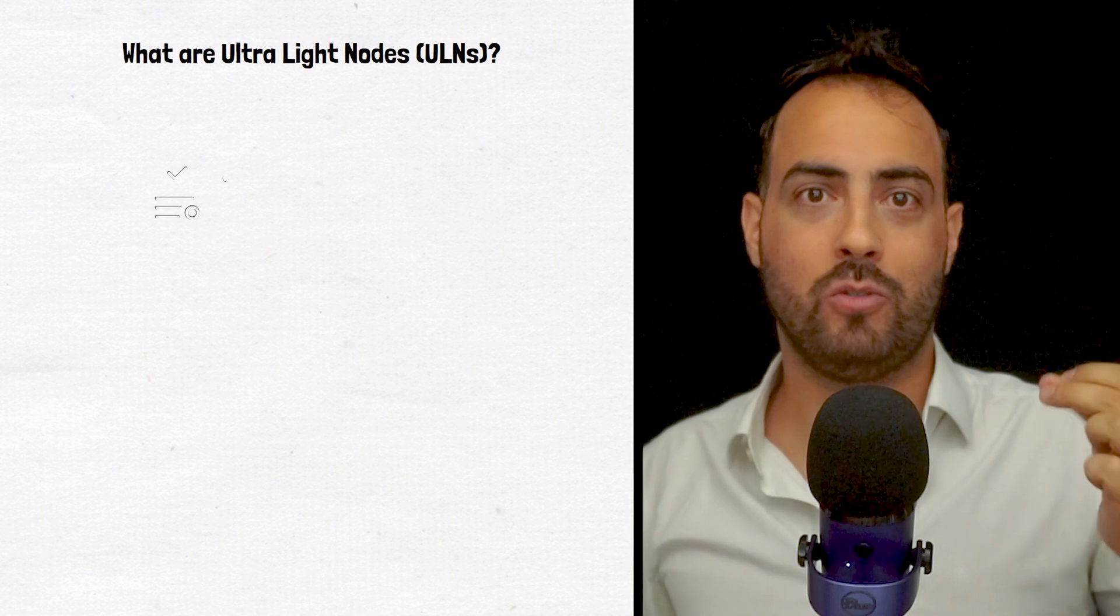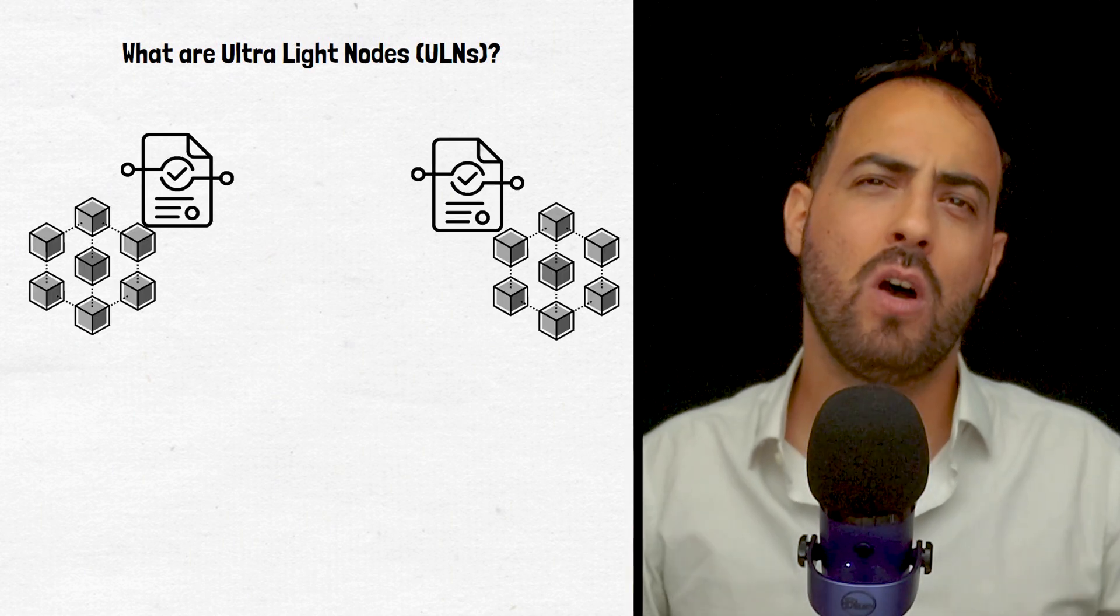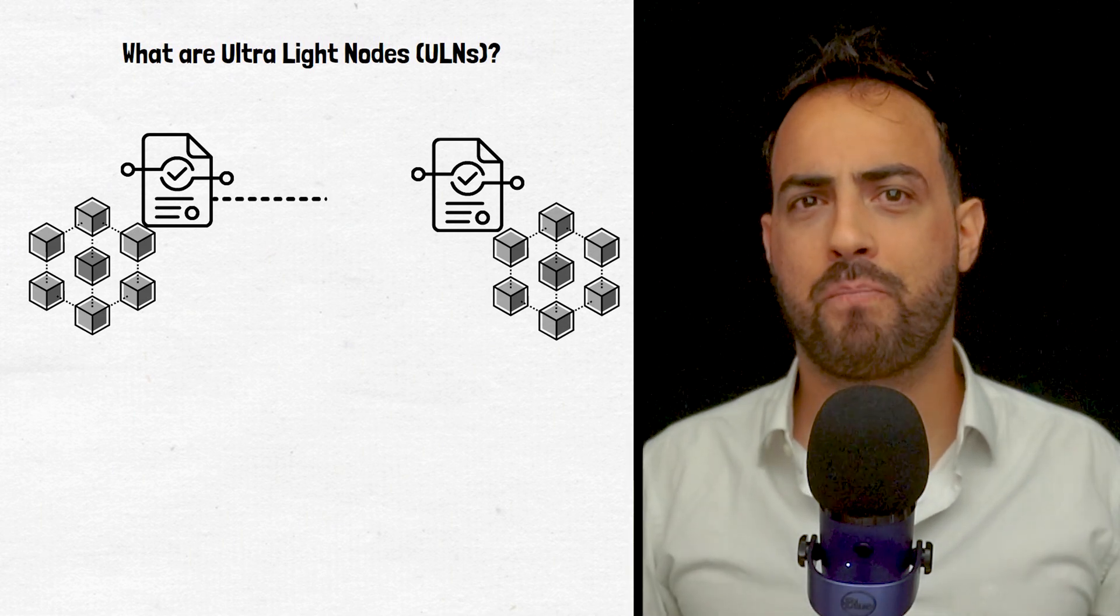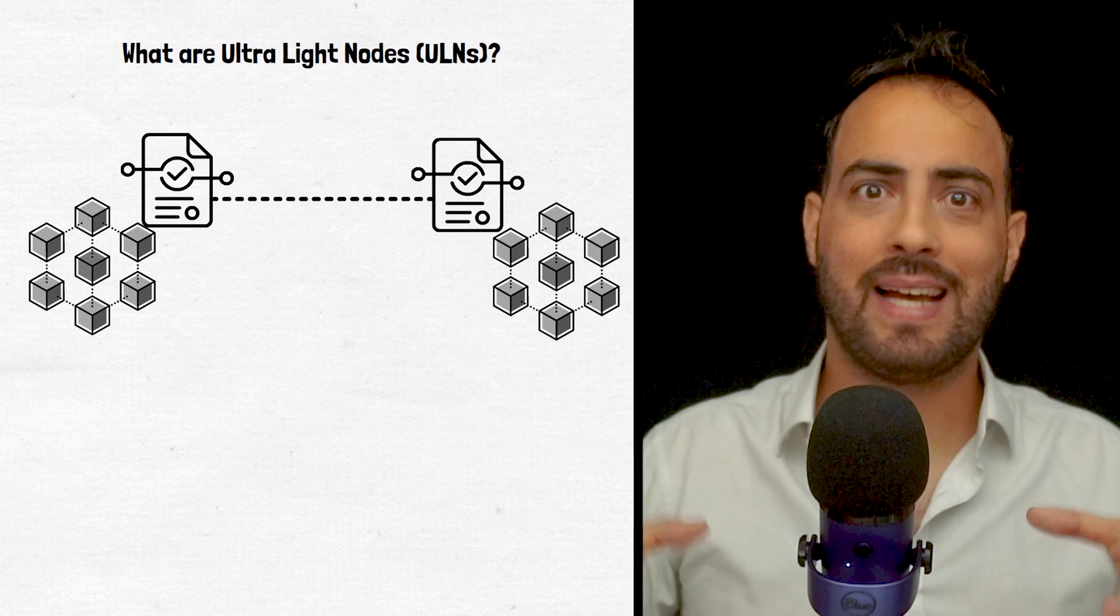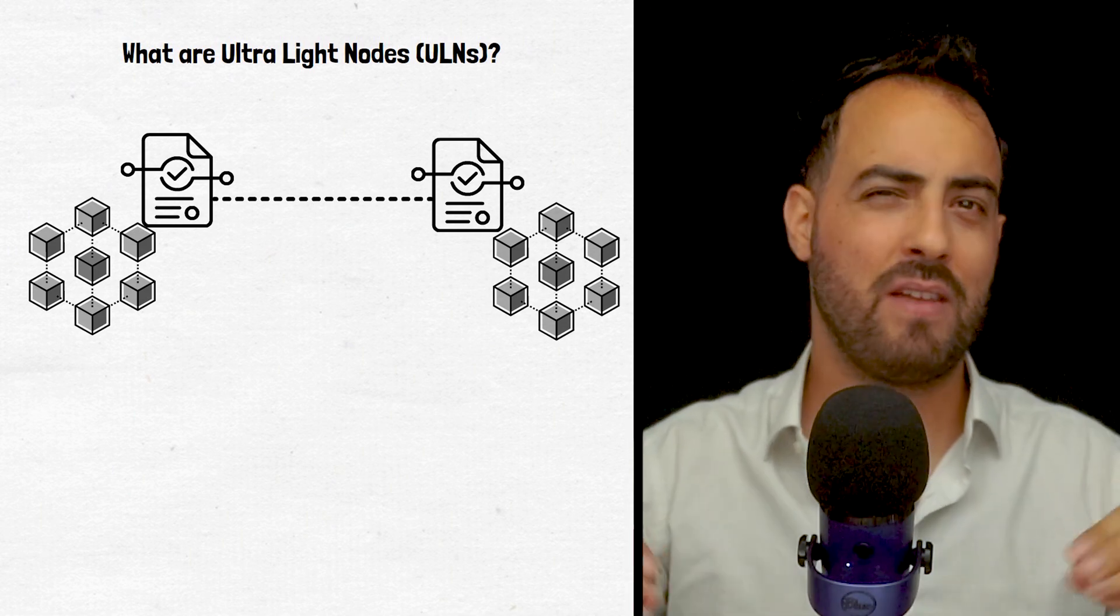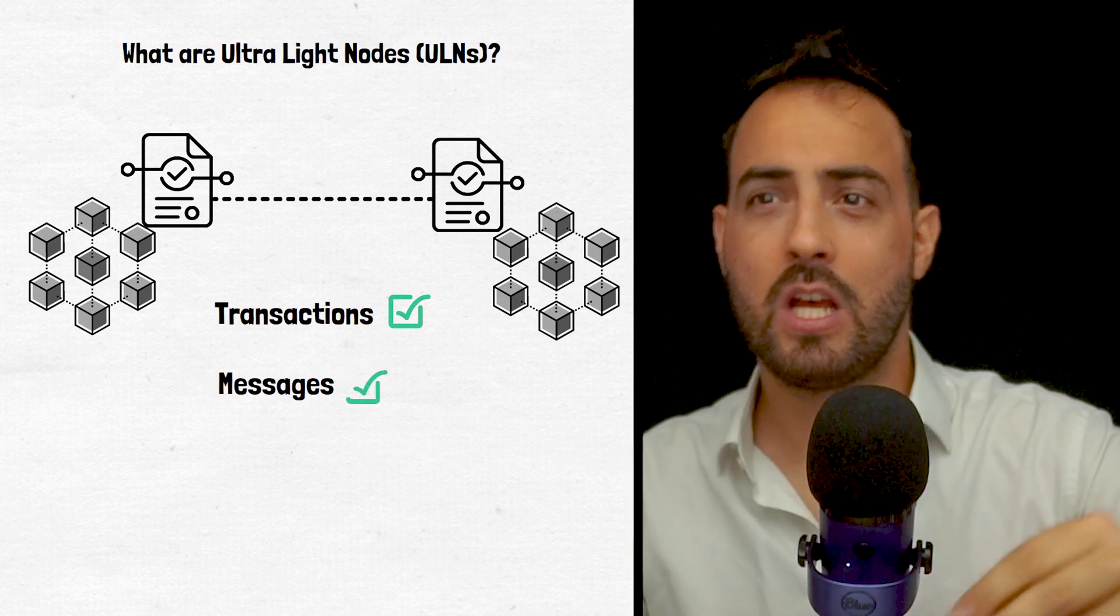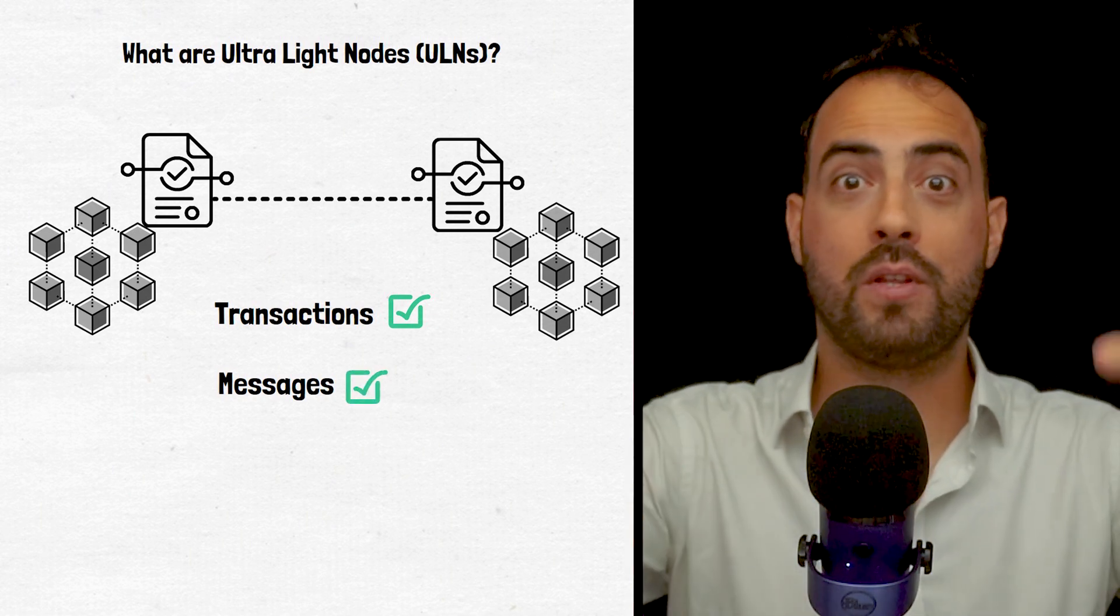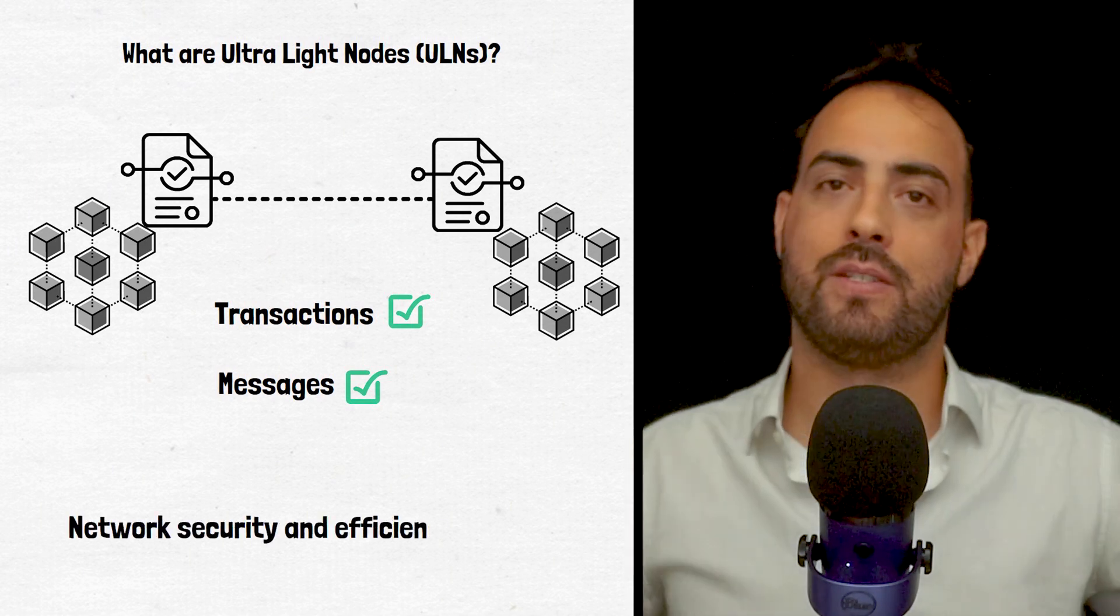Ultralight nodes, or ULNs, are smart contracts that run on each blockchain and act as endpoints for cross-chain communication. Functionally speaking, Ultralight nodes act as mini-validators and verify the validity of transactions and messages from other blockchains using headers and transaction proofs, which ultimately ensures both network security and efficiency.